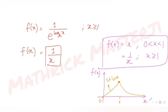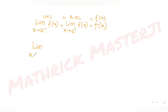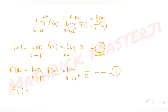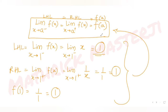Checking at x = 1: the left-hand limit (x → 1⁻) uses f(x) = x, giving 1. The right-hand limit (x → 1⁺) uses f(x) = 1/x, giving 1/1 = 1. And f(1) = 1/1 = 1. All three are equal, so the function satisfies continuity. Since the function is continuous at all values of x, m — the number of points where it is not continuous — is 0.